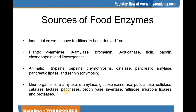Here comes the sources of food enzymes. For industrial purposes, enzymes can be traditionally derived from three sources: plants, animals, and microorganisms. Some of the enzymes which can be derived from plants are alpha-amylase, beta-amylase, bromelain, beta-glucanase, phycine, papain, chymopapain, and lipoxygenase.